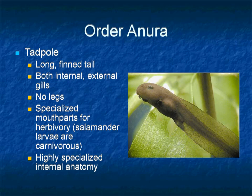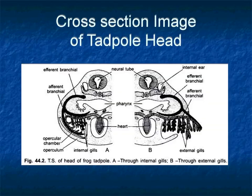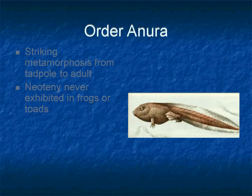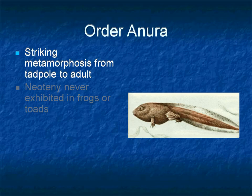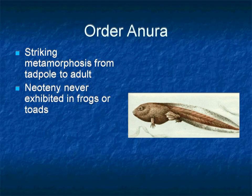The tadpole's internal anatomy is highly specialized — they look and act entirely different from adult frogs. Initially tadpoles have external gills, which are later replaced by internal gills during development. Metamorphosis from a tadpole to an adult frog is a prominent transformation. Moreover, you will never see neotenic conditions in frogs or toads, which was common in salamanders.